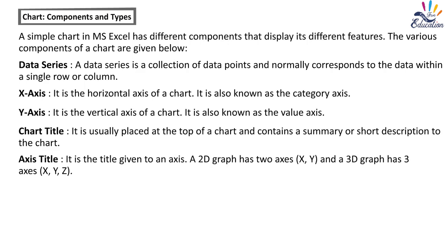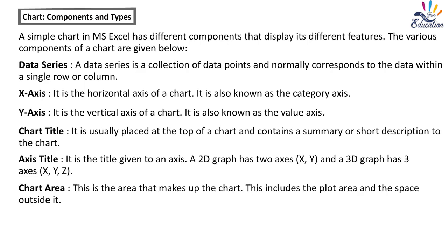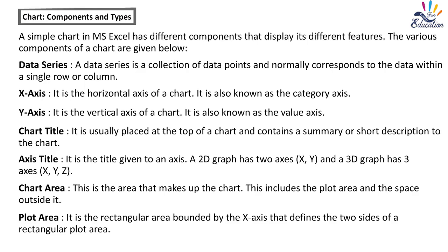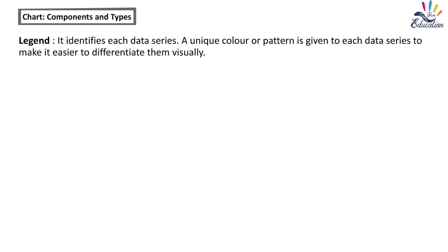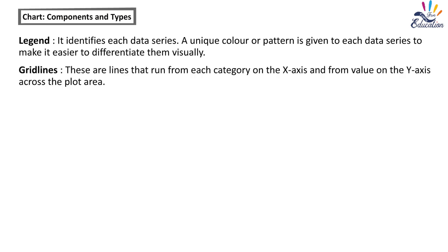The axis title is the title given to an axis. A 2D graph has two axes, x and y, and a 3D graph has three axes, x, y, and z. The chart area is the entire area that makes up the chart, including the plot area and the space outside it. The plot area is the rectangular area bounded by the x-axis that defines the two sides of a rectangular plot area. A legend identifies each data series using a unique color or pattern. Gridlines are lines that run from each category on the x-axis and from values on the y-axis across the plot area.